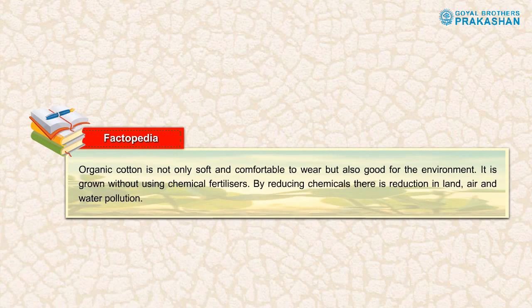Factopedia: Organic cotton is not only soft and comfortable to wear, but also good for the environment. It is grown without using chemical fertilizers. By reducing chemicals, there is a reduction in land, air, and water pollution.